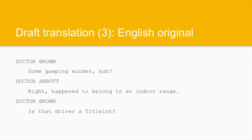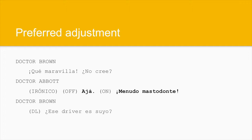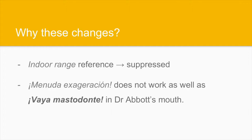An interesting case, this one. In fact, the original script did not include these lines, therefore we had to resort to our own personal transcript. That's quite important, especially if this is a serious translation work. Referring to the building he intends to turn into his doctor's office, Dr. Brown exclaims, 'Some golfing weather, huh?' Dr. Abbott answers, 'I happen to belong to an indoor range.' 'Is that driver a Titleist?' says Dr. Brown. In Spanish, our draft version is: ¡Qué maravilla! ¿No cree? Y que lo diga, vaya exageración. Ese driver es suyo. But after dubbing, we suggest an adjustment, especially in Dr. Abbott's intervention, resulting in: ¡Qué maravilla! ¿No cree? Mm-hmm. ¡Menudo mastodonte! Ese driver es suyo.